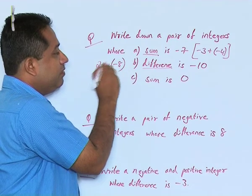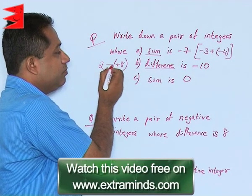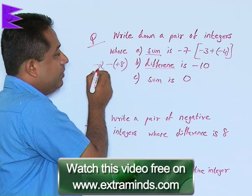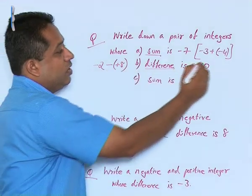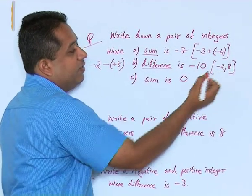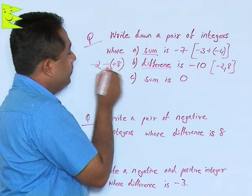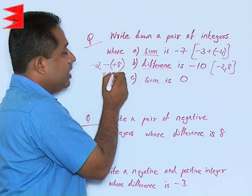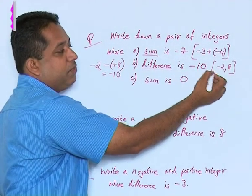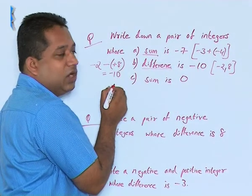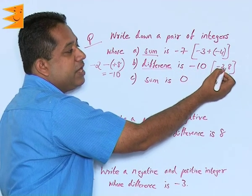We do not want positive 10, so we have to be very careful with the signs. Changing the signs, if we take minus 2 minus 8, we are subtracting the numbers minus 2 and 8. If we take the two numbers as minus 2 and 8, and subtract: minus 2 minus 8 gives us minus 10. If taken the other way — 8 minus 2 — we get positive 10, which would be a wrong answer. So the integers are minus 2 and 8.